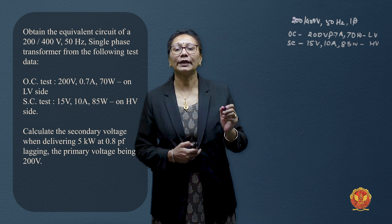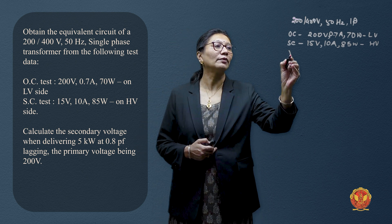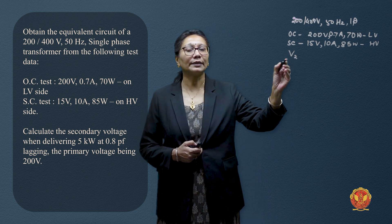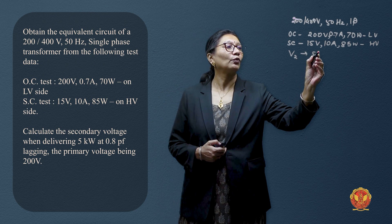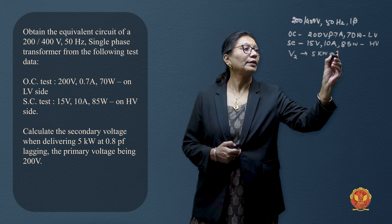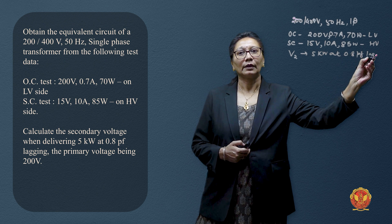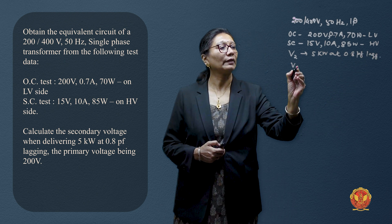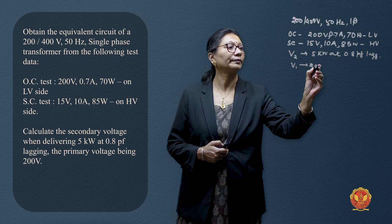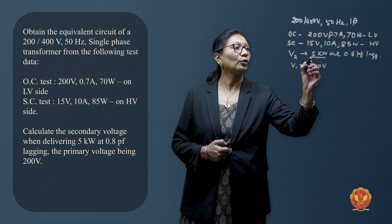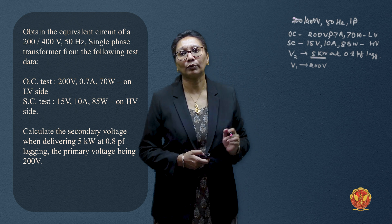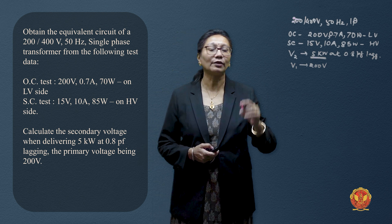Short-circuit test data is 15 volt, 10 ampere, 85 watts on HV side. We have to calculate secondary voltage V2 when it is delivering 5 kilowatts at 0.8 power factor lagging while the primary voltage is given as 200 volt.